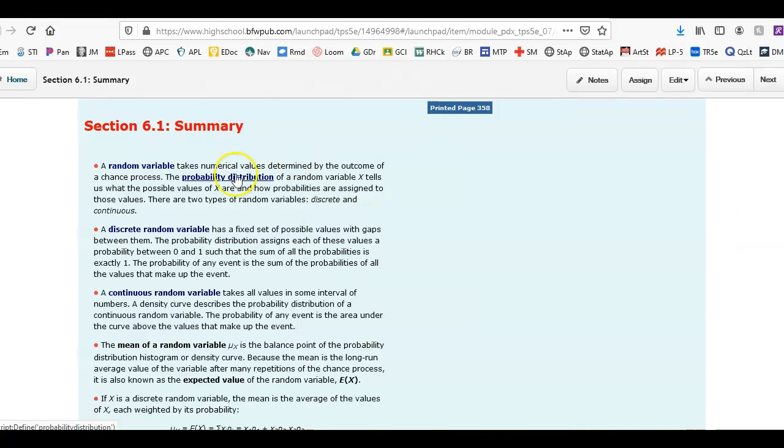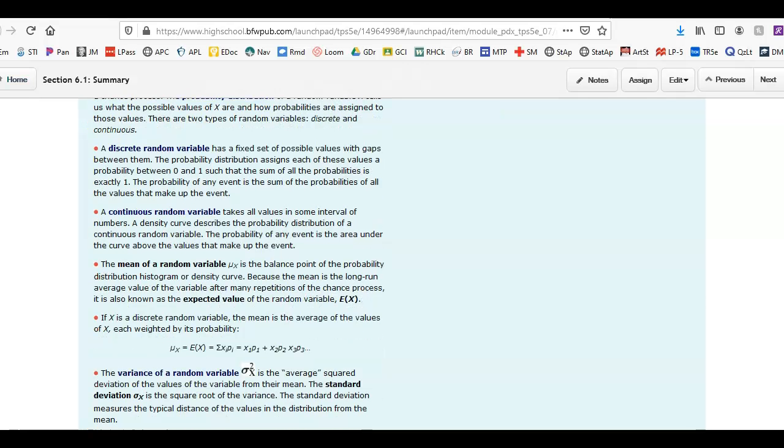So, summary here. We talked about random variables. They're going to have probability distributions. For discrete random variable, it's just going to be that table. If it's a continuous random variable, it's going to be modeled with a density curve. Make sure you can discern the difference between the two. Discrete has gaps between the outcomes. How many birds are on the tree? How many leaves are on the tree? Continuous random variable is, like I said, anything with time, temperature. Those are probably the best examples I can give you for continuous random variables.